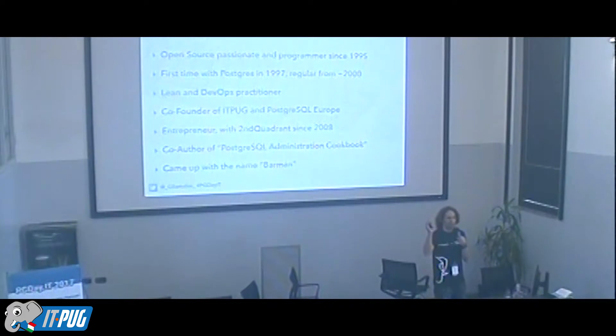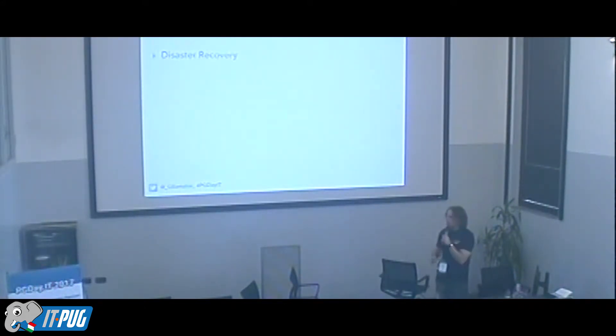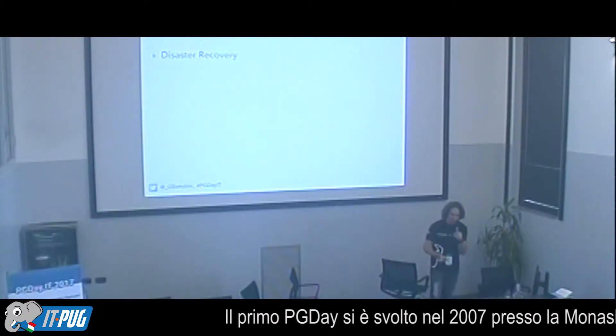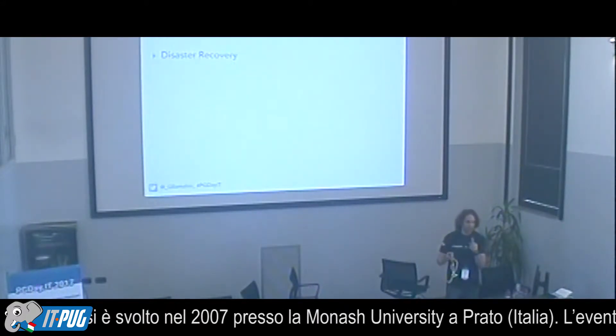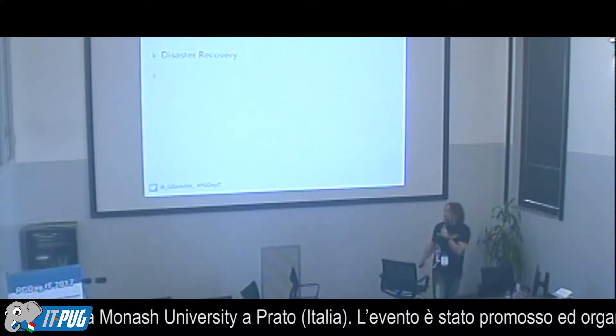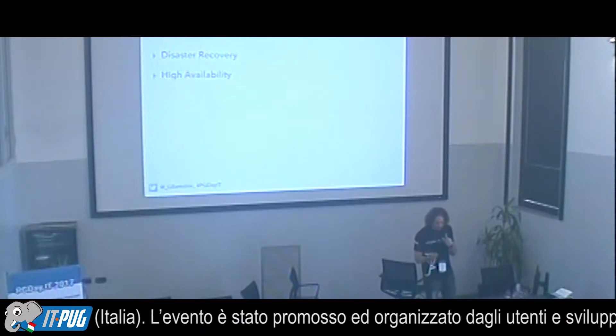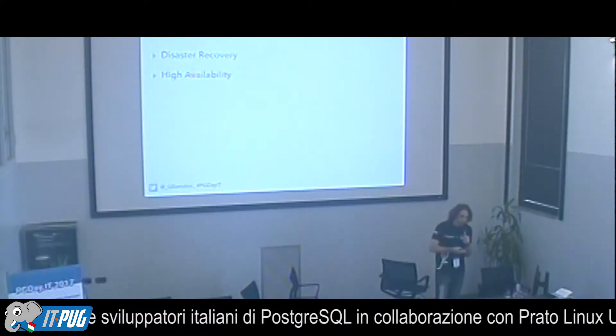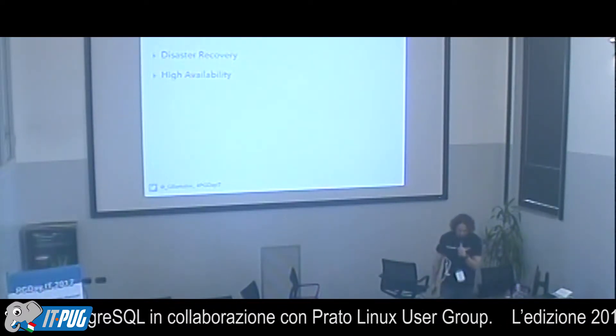Business continuity is everything — everything it takes to keep your business services up. Within that, IT infrastructure matters, and when we talk about IT we normally refer to disaster recovery, which is all it takes to reduce the risk of data loss before, during, and after a disaster. High availability, or HA, is all it takes to recover in the shortest amount of time following a disaster.